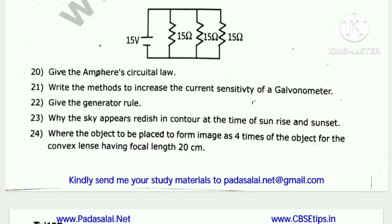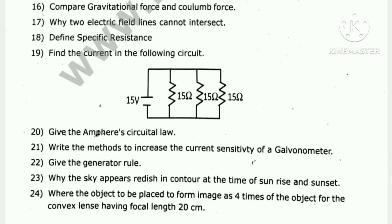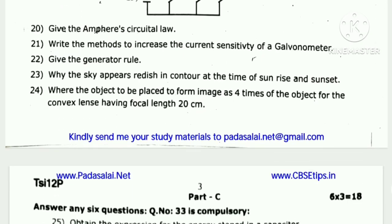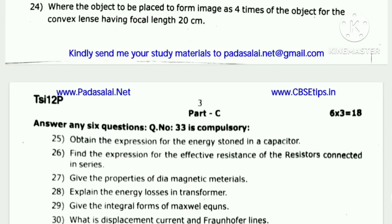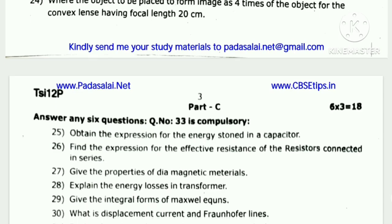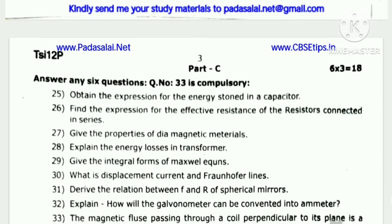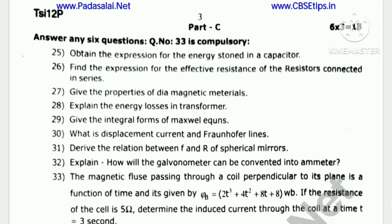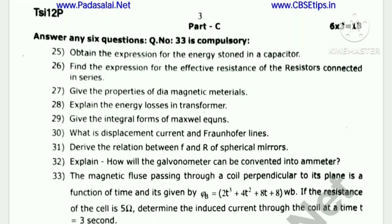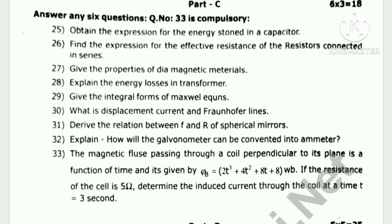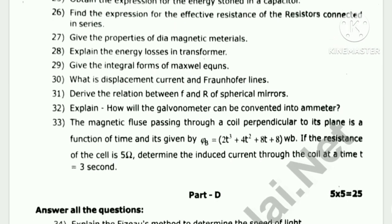In the problem question part, question 24 is compulsory. Next, Part C — three more questions, 6 marks each, totalling 18 marks. Obtain the expression for the energy stored in a capacitor. Give the properties of diamagnetic materials. Explain the energy losses in a transformer. Give the integral forms of Maxwell's equations. What is displacement current? Questions 33 is compulsory, with 2 problems.